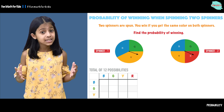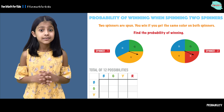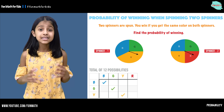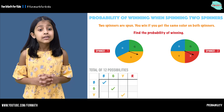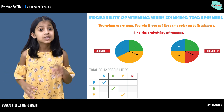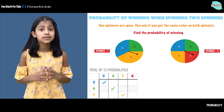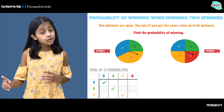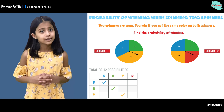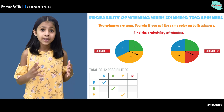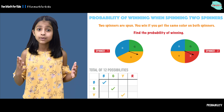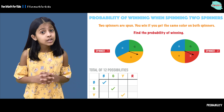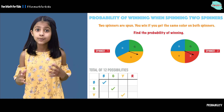How many possibilities are there of winning? There are three possibilities. On spinner one we have one blue, and on spinner two we also have a blue, so blue and blue is one possibility. Similarly, green and green, and yellow and yellow are the other two winning possibilities.